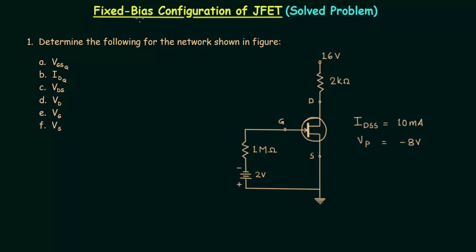We have completed the fixed bias configuration of JFET and now in this presentation we will solve one problem. You can see the problem on your screen and in this problem we have to determine these parameters for the network shown.